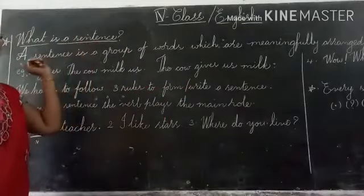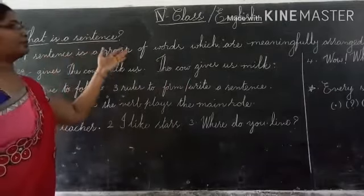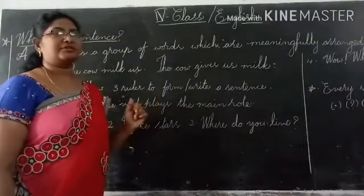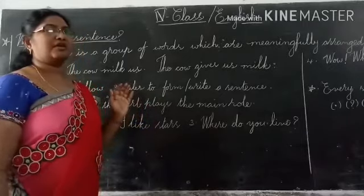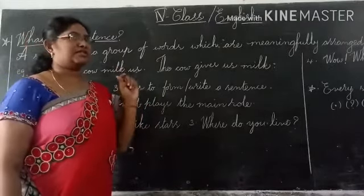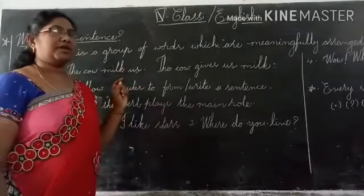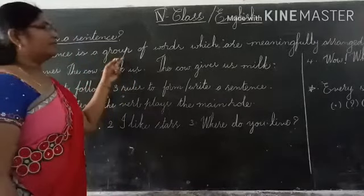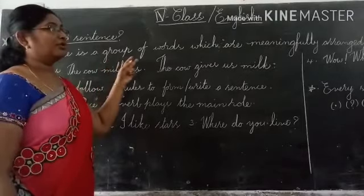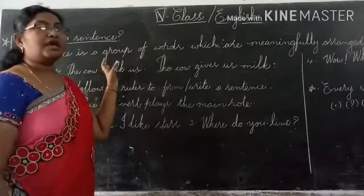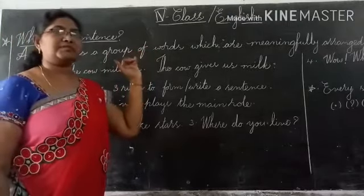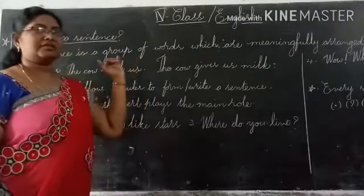What is a sentence? A sentence is a group of words which are meaningfully arranged. Why do we have to arrange it meaningfully? First think of how we can make a word. A word we can make with a group of letters. Likewise, we have to arrange the group of words meaningfully. Then it becomes a meaningful sentence.